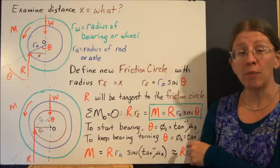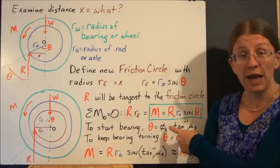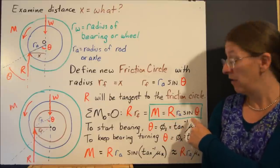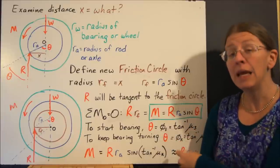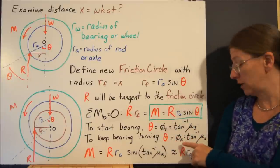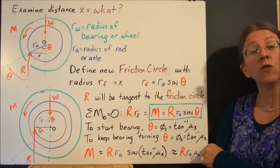To start the bearing moving, then theta is going to be the friction angle, phi s. Now it's the arc tan of mu s. That's to get it going. To keep it going, you do the same thing with phi k's. So to keep it going, theta looks like phi k, or the inverse tangent of mu k.